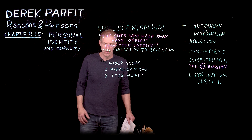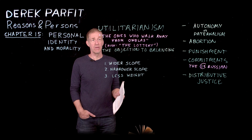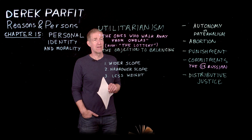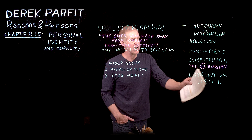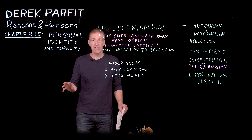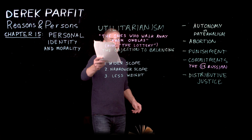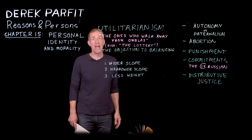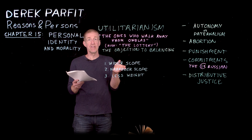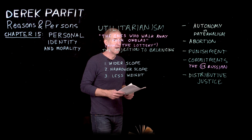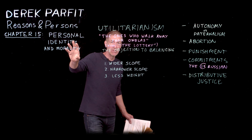Parfit is going to argue that his new views on personal identity take some of the sting away from criticisms like this, and therefore make utilitarianism more palatable by undercutting one of its key objections. Another way to put this involves a Rawlsian phrase — Rawls, if Parfit is a giant in Anglo-American philosophy, perhaps of even greater stature is John Rawls, whose great work 'A Theory of Justice' was published around 1971.